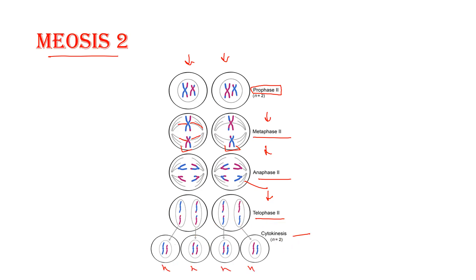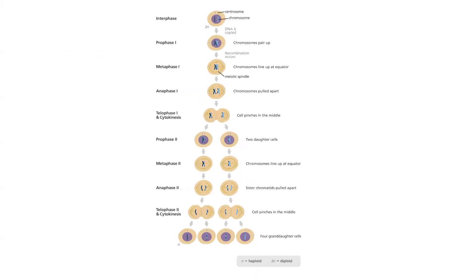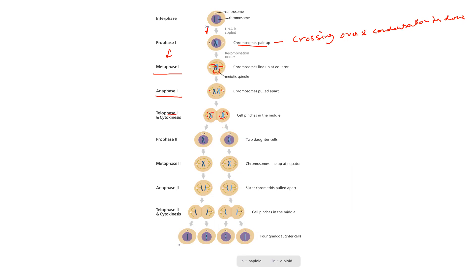So four haploid cells are formed and meiosis two is complete. Let's review both meiosis one and two together. During interphase, DNA is copied. In prophase one, chromosomes pair up, crossing over takes place, and condensation is done. In metaphase one, chromosomes align at the metaphase plate and spindle fibers attach. In anaphase one, chromosomes are pulled apart to opposite poles. In telophase one, the nuclear envelope forms around the chromosomes and cytokinesis divides one cell into two.